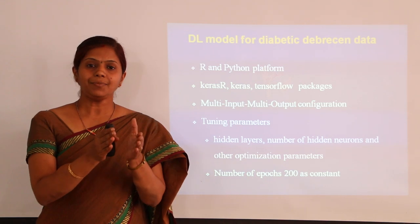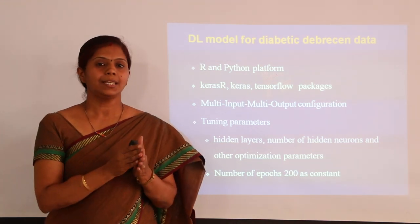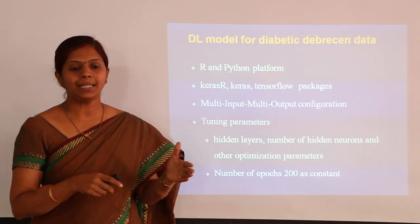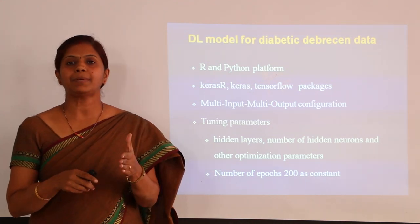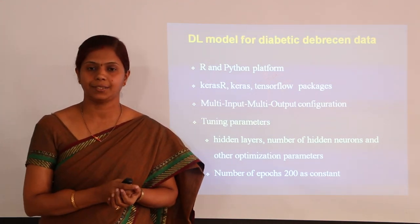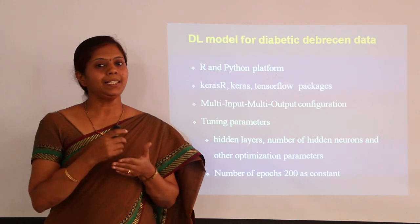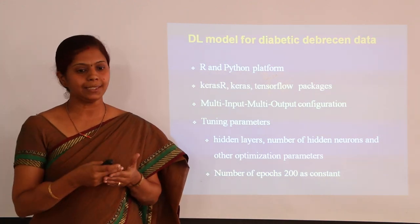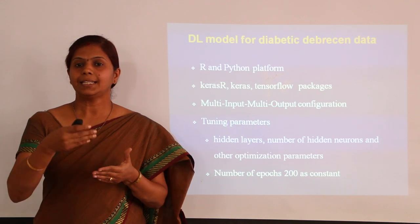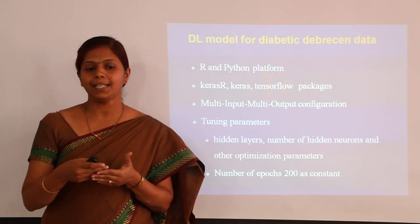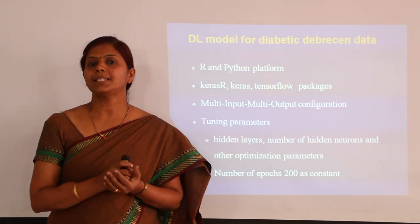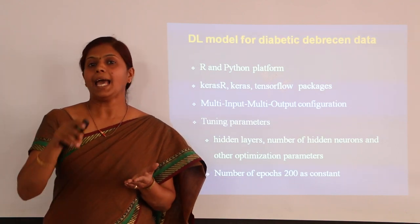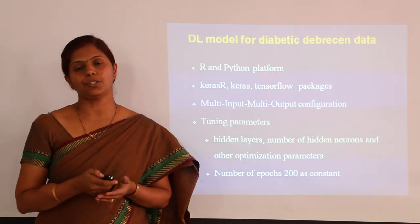Since we are having 19 features and one output with two classes, it is a multi-input multi-output configuration. The experiment is carried out by tuning parameters: number of hidden layers, number of neurons in the hidden layer, and other optimization parameters, keeping the epoch at 200 as constant.